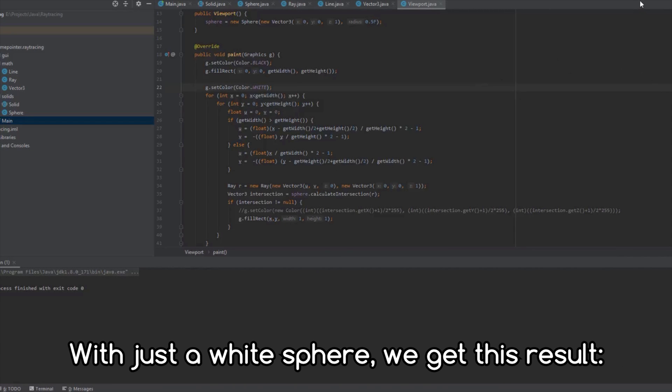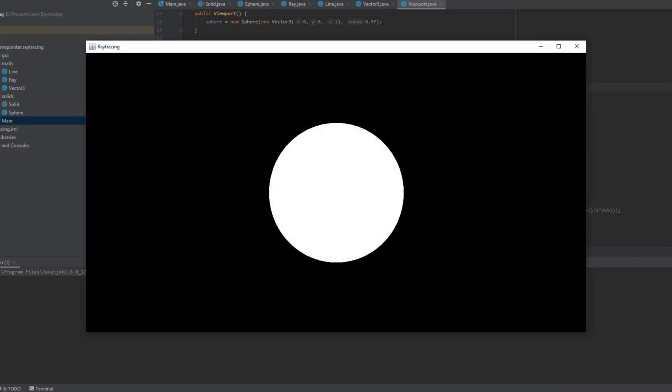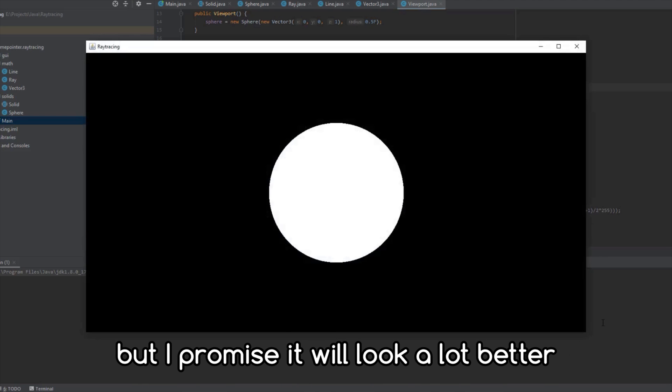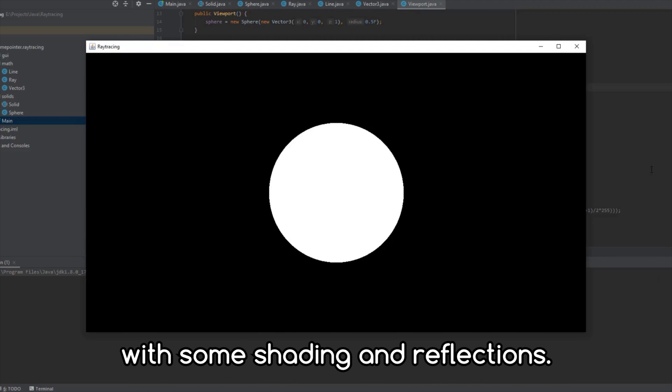With just a white sphere, we get this result. As you can see, the shape of the sphere is visible, but I promise it will look a lot better with some shading and reflections.